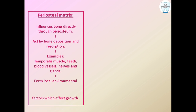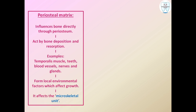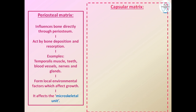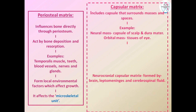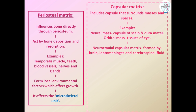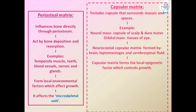The periosteal matrix forms local environmental factors that affect growth, and it basically affects the microskeletal unit. The capsular matrix includes the capsule that surrounds the masses and spaces. Examples include the neural mass — with capsule of scalp and dura mater — and the orbital mass, which is the tissues of the eye. The capsular matrix creates local epigenetic growth factors, whereas the periosteal matrix creates local environmental growth factors.